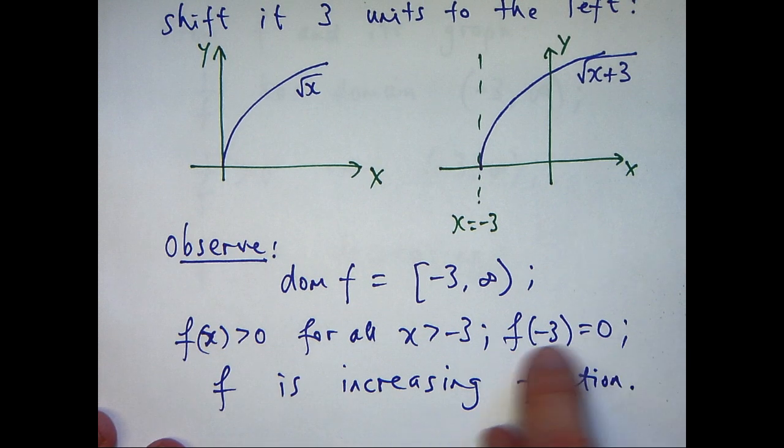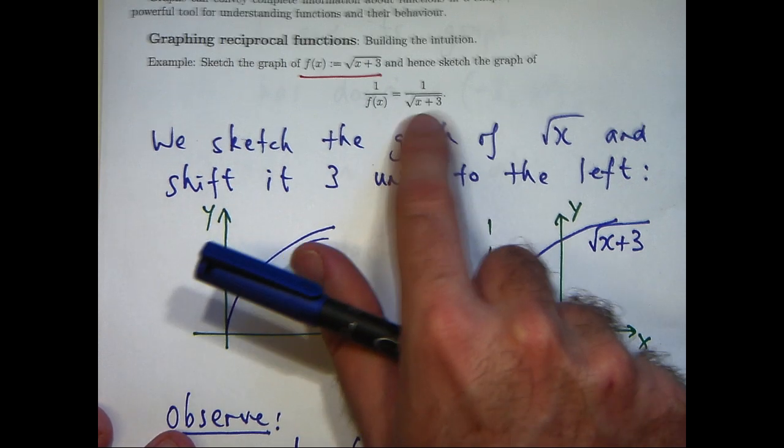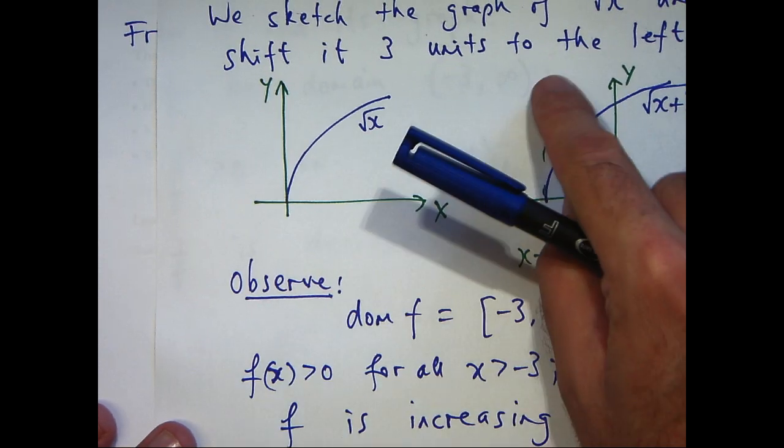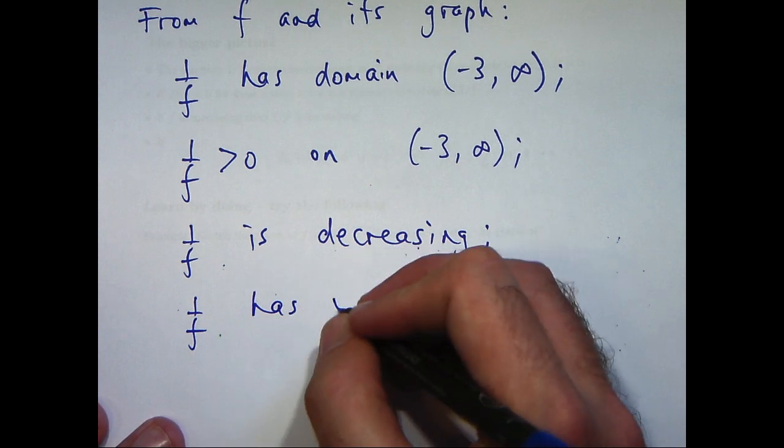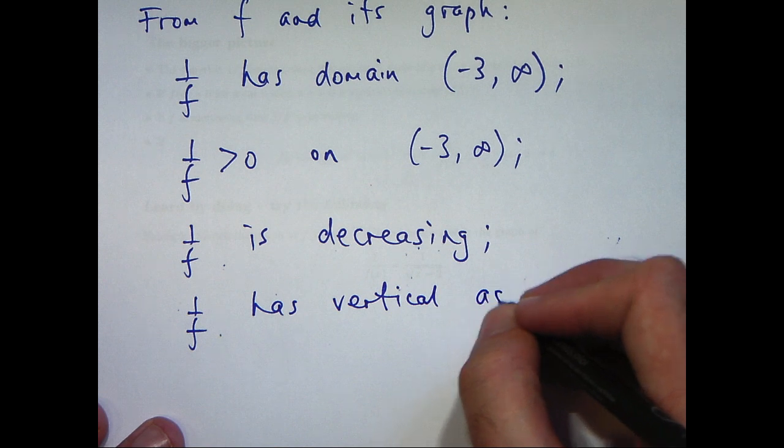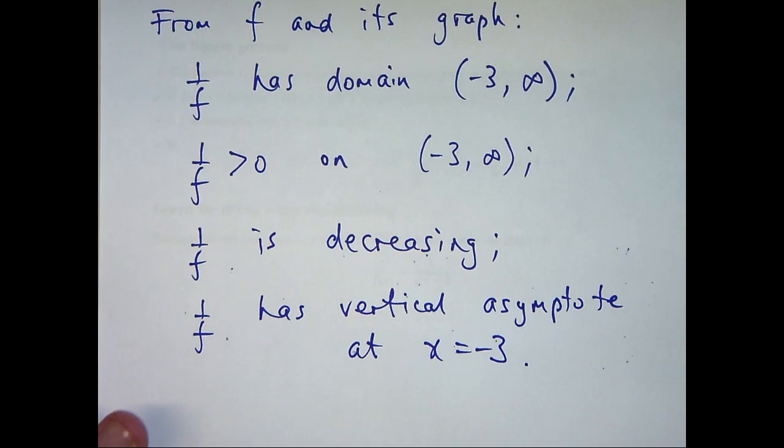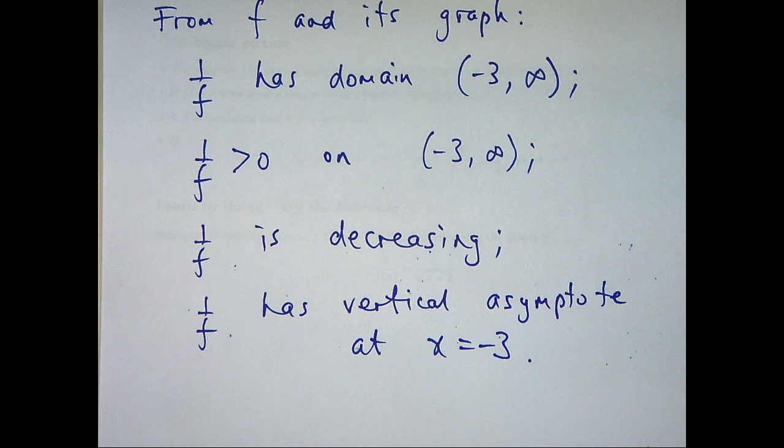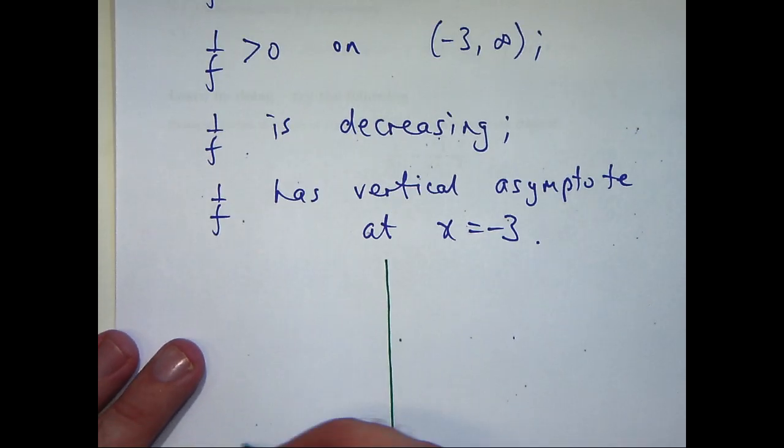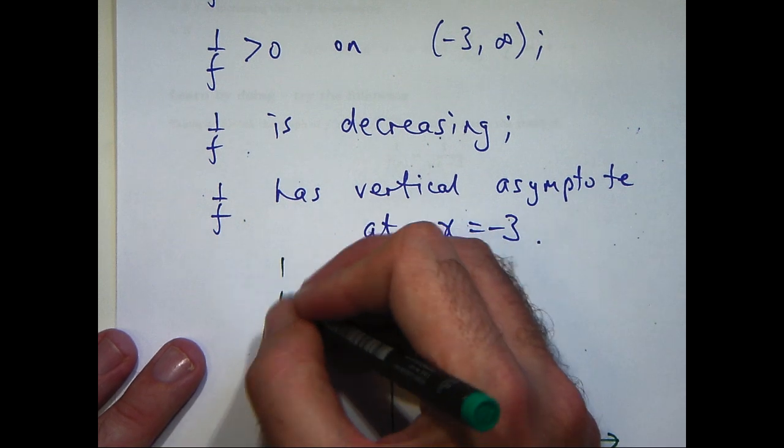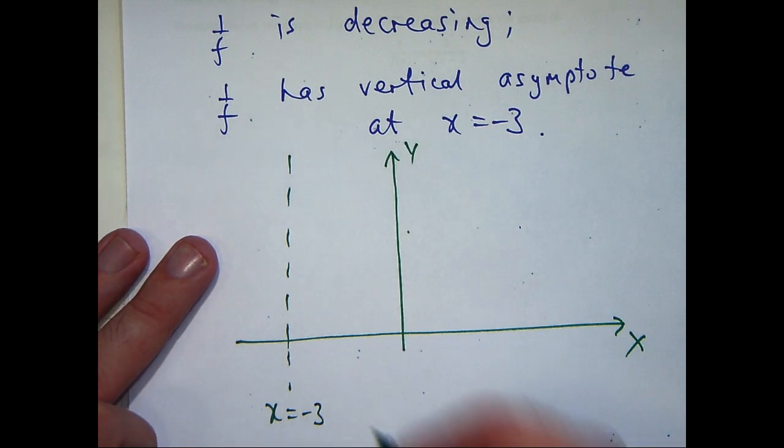And finally, this piece of information, f of minus 3 equals 0, well, again, we can't divide by 0 at x equals minus 3 up here. So the line x equals minus 3 will be a vertical asymptote for the reciprocal function. Alright, let's use these pieces of information to sketch our curve.